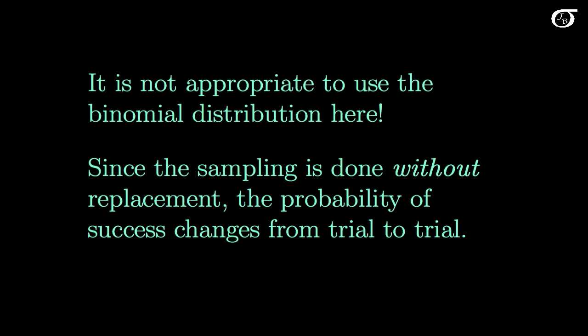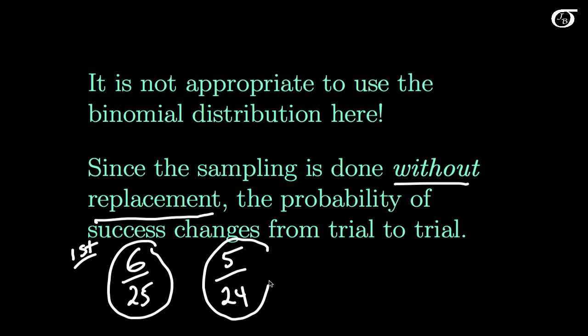Now as mentioned previously, it is not appropriate to use the binomial distribution here. Since the sampling is done without replacement, the probability of success is going to change from trial to trial depending on what happened before. So for example, suppose on the first draw there's 6 doctors out of 25 people total. The probability of getting a doctor is simply 6 out of 25 on the first draw. But suppose the first draw was a doctor. Then that name is taken out, and on the second draw the probability of getting a doctor is going to be 5 out of 24. And these are not equal. And so the probability of a success depends on what's happening in those other trials, and one of those major conditions of independence for the binomial distribution is not satisfied here.